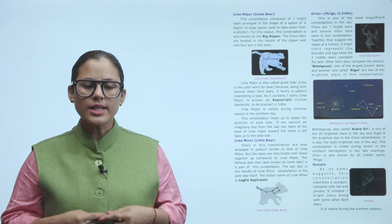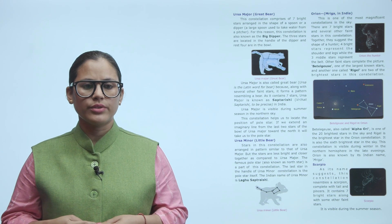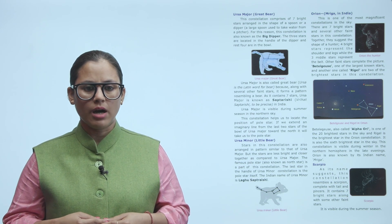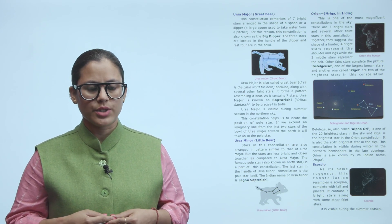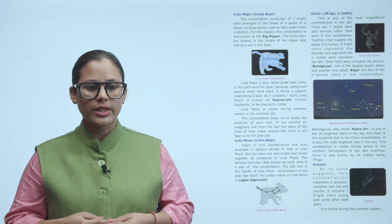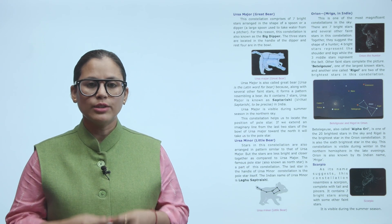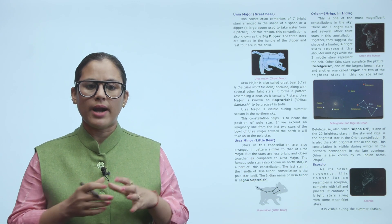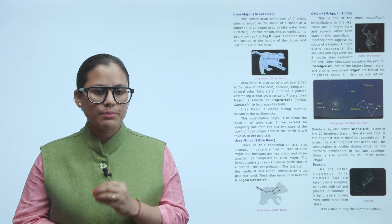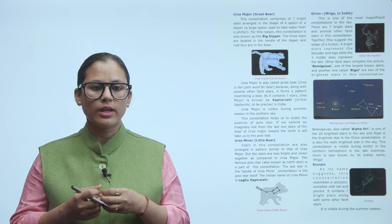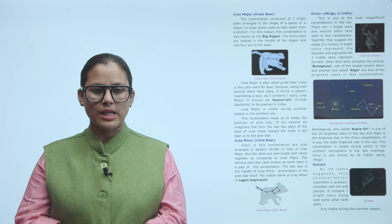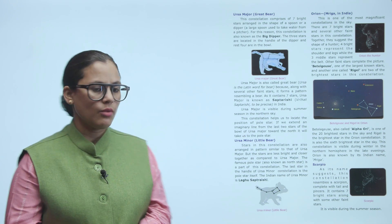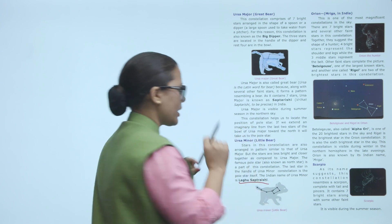Ursa Minor or Little Bear: Stars in this constellation are also arranged in patterns similar to that of Ursa Major, but the stars are less bright and closer together as compared to Ursa Major. The famous pole star, also known as North Star, is part of this constellation. The last star in the handle of Ursa Minor constellation is the pole star itself. The Indian name of Ursa Minor is Laghu Sapt Rishi.